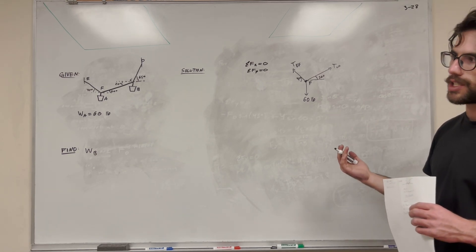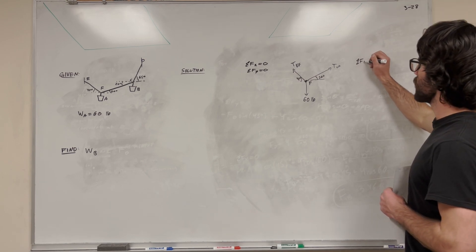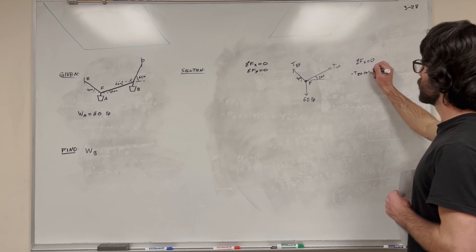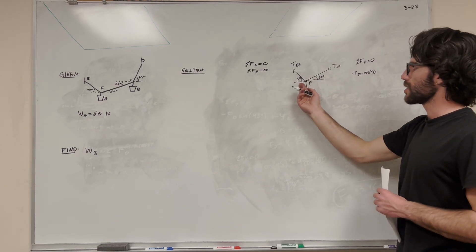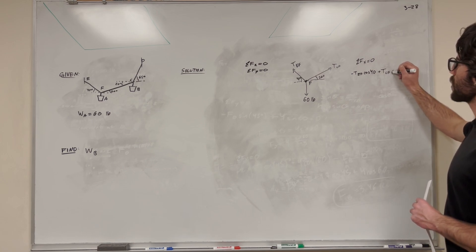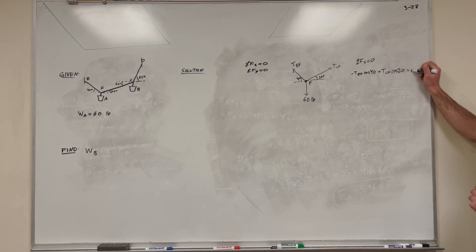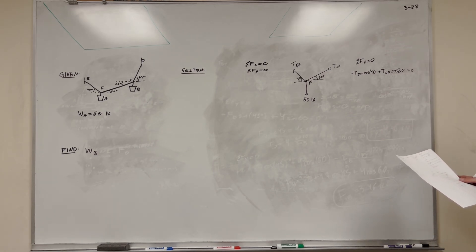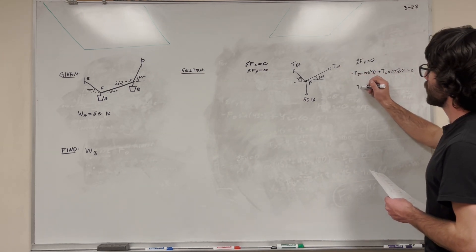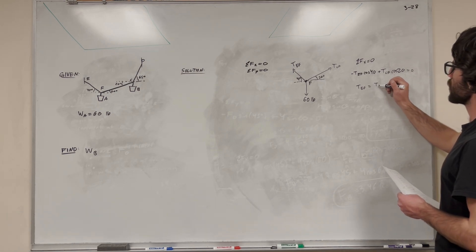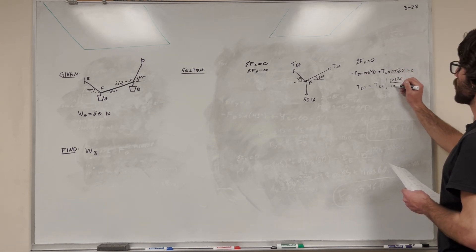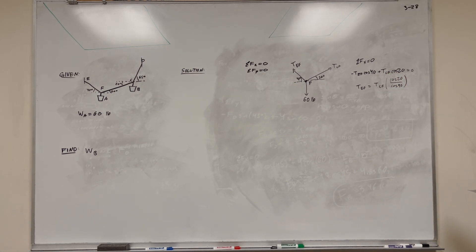We have two unknowns here, so we need a system of equations. For sum of forces X = 0: tension EF is pulling to the left, so we subtract tension EF times cosine of 40 — that's the adjacent (X) component — and add tension CF times cosine of 20, since CF pulls to the right. Set equal to zero. Solving in terms of tension EF: tension EF equals tension CF times cosine of 20 over cosine of 40.